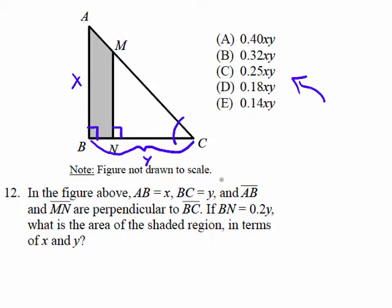So BN equals 0.2Y. If BN is 0.2Y, then NC is 0.8Y. And if NC is 0.8Y, then MN is 0.8X.